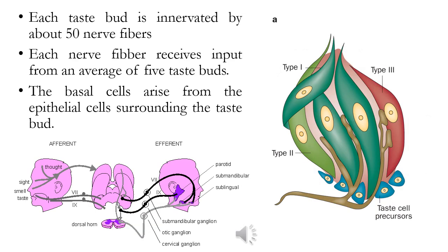Looking at types one, two, and three of gustatory cells, each taste bud is innervated by at least 50 nerve fibers, and each nerve fiber receives input from an average of about five taste buds. So one taste cell may be innervated by one fiber, while a fiber receives input from more than one taste bud. The basal cells arise from epithelial cells that surround the taste pads.